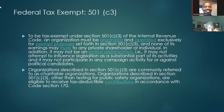First, we want to start off with what is a 501c3. To be tax exempt under Section 501c3 of the Internal Revenue Code, an organization must be organized and operated exclusively for exempt purposes set forth in Section 501c3, and none of its earnings may inure to any private shareholder or individual.